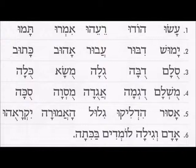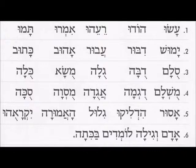Now we have a few more examples of the shuruq on line number five: asur, hidliku, gilul, haamura, ikrauhu. And last but not least, on line number six — this is a phrase: 'Adam ve Gila lomdim ba kita' — Adam and Gila are studying in the classroom. One more time: 'Adam ve Gila lomdim ba kita'. Kol hakavod!